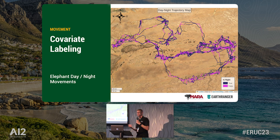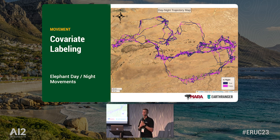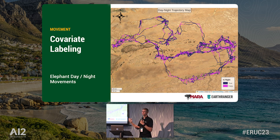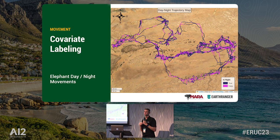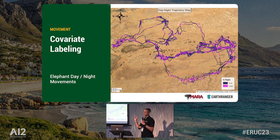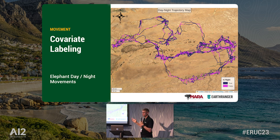Covariate labeling is another thing we've done a lot of. This is a simple day-night example — we have an astronomy tool that can tell you moon phase and whether the sun was up or not. It works in the Arctic, it works at the equator. But we can also integrate with Google Earth Engine, so for every dot on the map, you want to know the slope, the vegetation land cover, the NDVI value — we have tools that pull that out of Google Earth Engine and give you an annotated track.